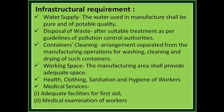Water supply: the water used in manufacture shall be pure and of potable quality. Disposal of waste should be as per the guidelines of the pollution control authority. Containers: there will be separate arrangements for manufacturing containers and for washing, cleaning, and drying such containers. Working space: the manufacturing area shall provide adequate space. Health, clothing, sanitization, and hygiene of workers is the utmost priority. Medical services: adequate facilities for first aid should be provided to all workers, and medical examination of workers should be carried out after justified periods of time.